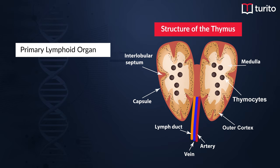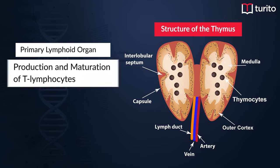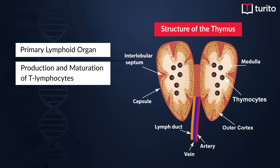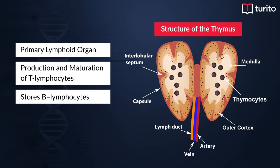What is a primary lymphoid organ? We see that there is production and maturation of T lymphocytes inside the thymus gland, hence it is the primary lymphoid organ. It also stores B lymphocytes.